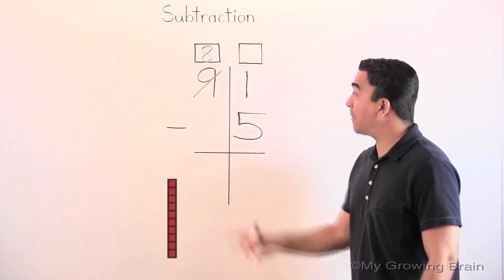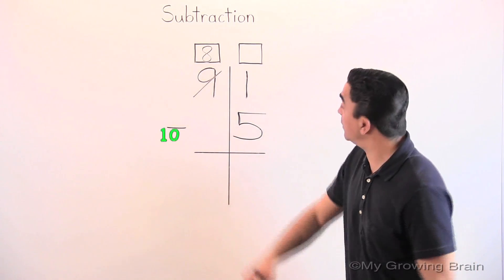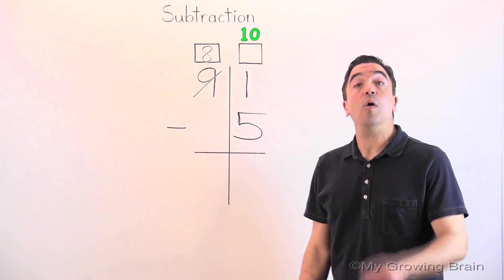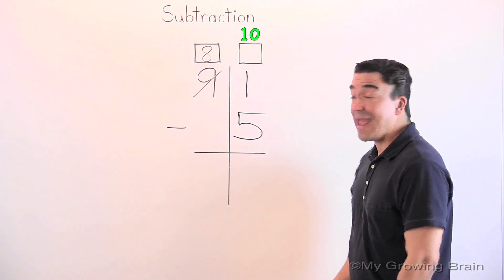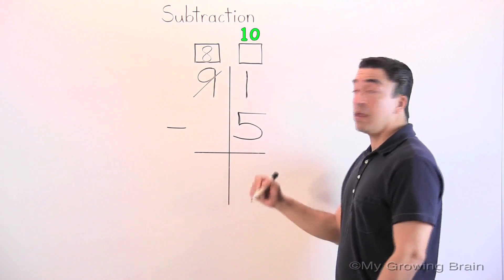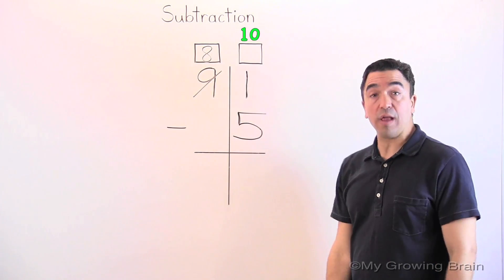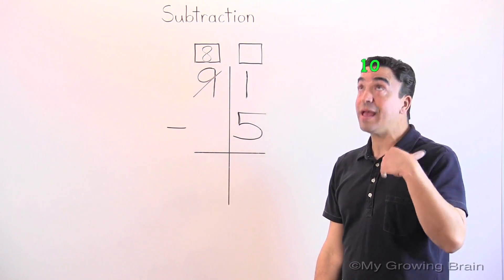Now, I'm going to regroup that ten over into the ones place, and I'm going to add ten plus one. Put the ten in our head. Count up one.